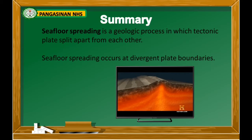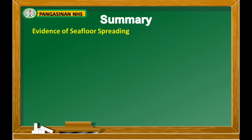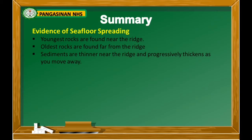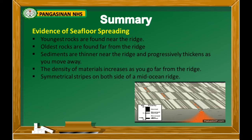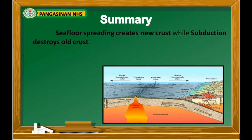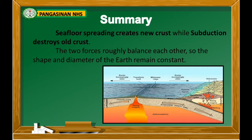Seafloor spreading is a geologic process in which tectonic plates split apart from each other, occurring at divergent plate boundaries. The evidence of seafloor spreading includes: youngest rocks found near the ridge, oldest rocks found far from the ridge, sediments thinner near the ridge and progressively thickening away from it, density of materials increasing with distance from the ridge, and symmetrical stripes on both sides of a mid-ocean ridge. Seafloor spreading creates new crust while subduction destroys old crust, and the two forces balance each other so the Earth's shape and diameter remain constant.